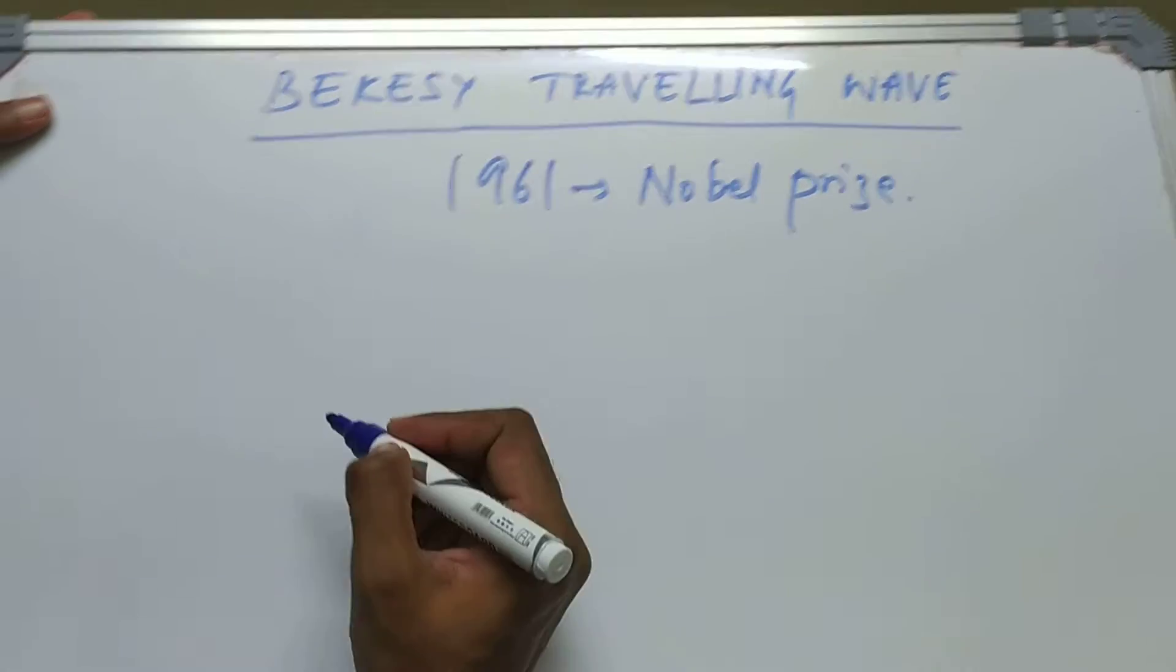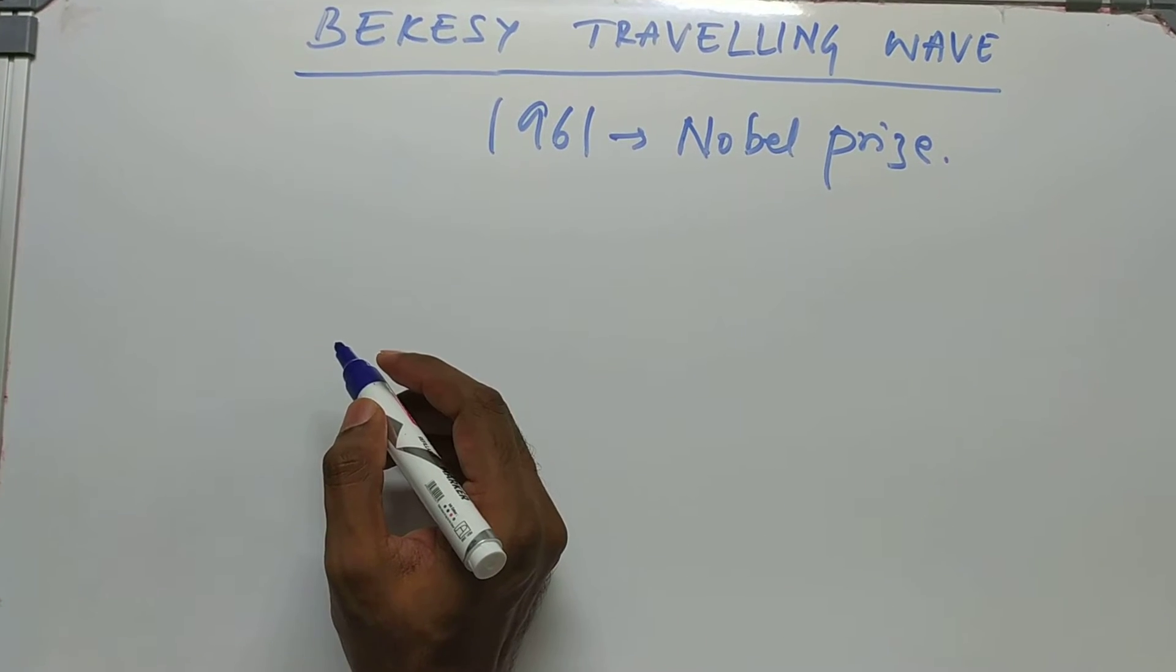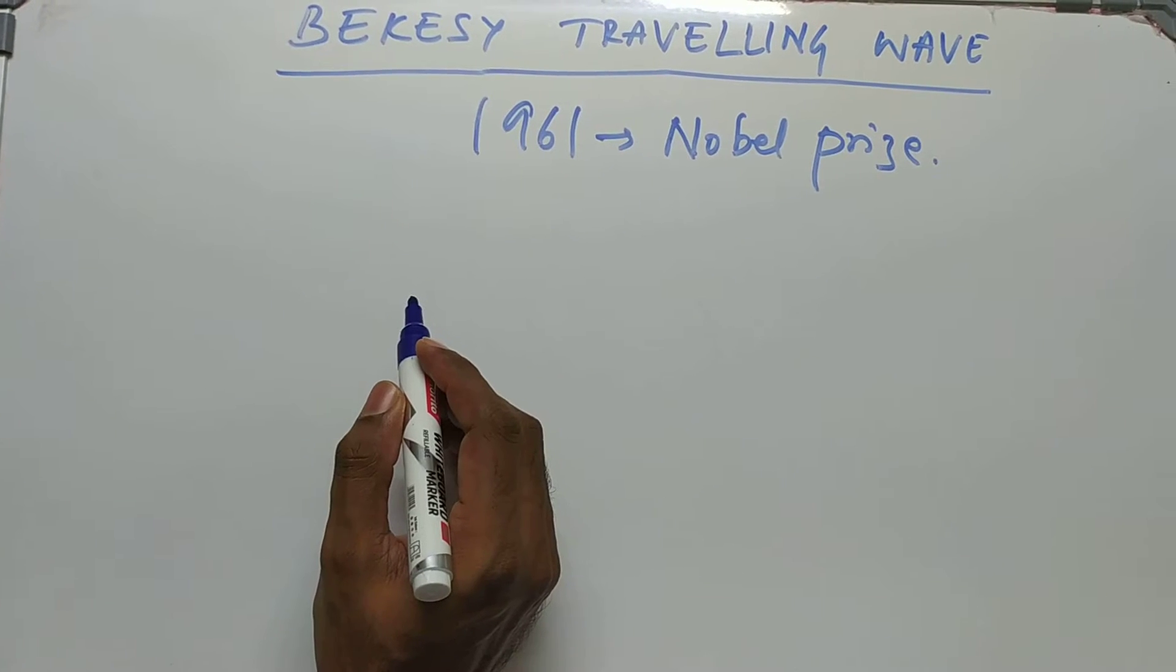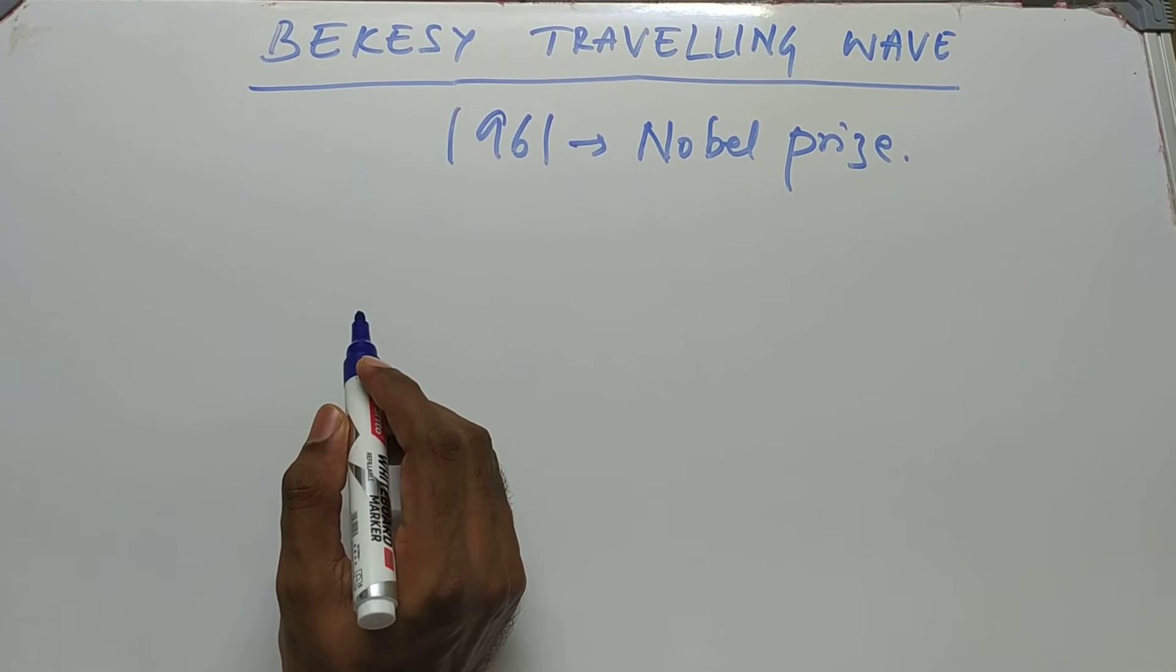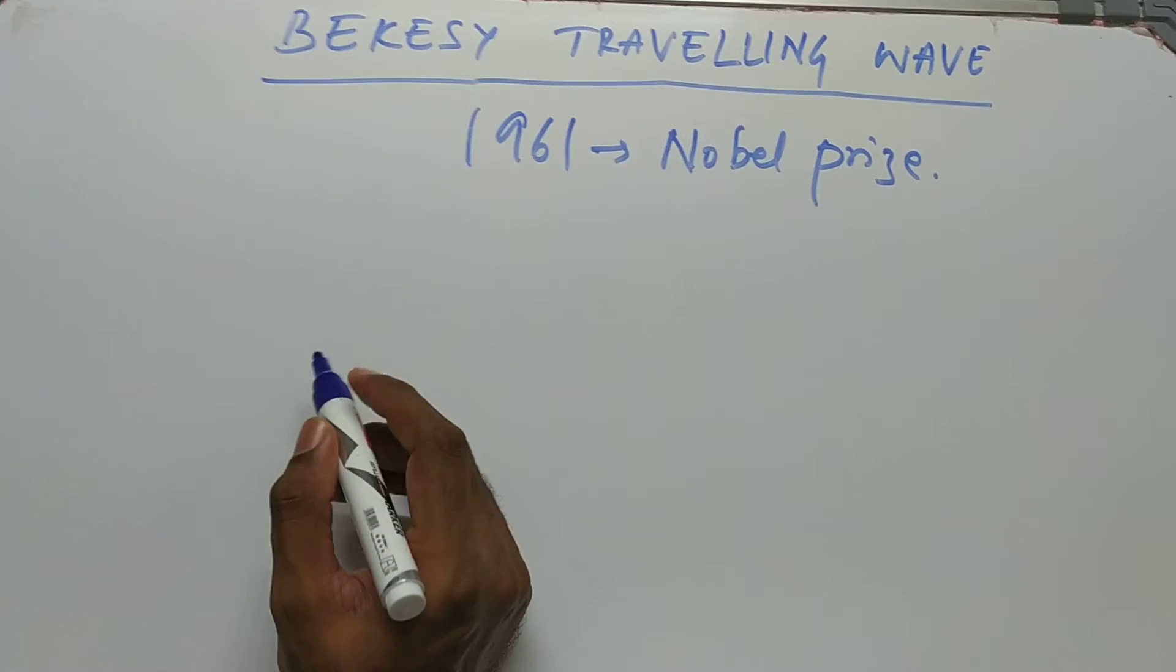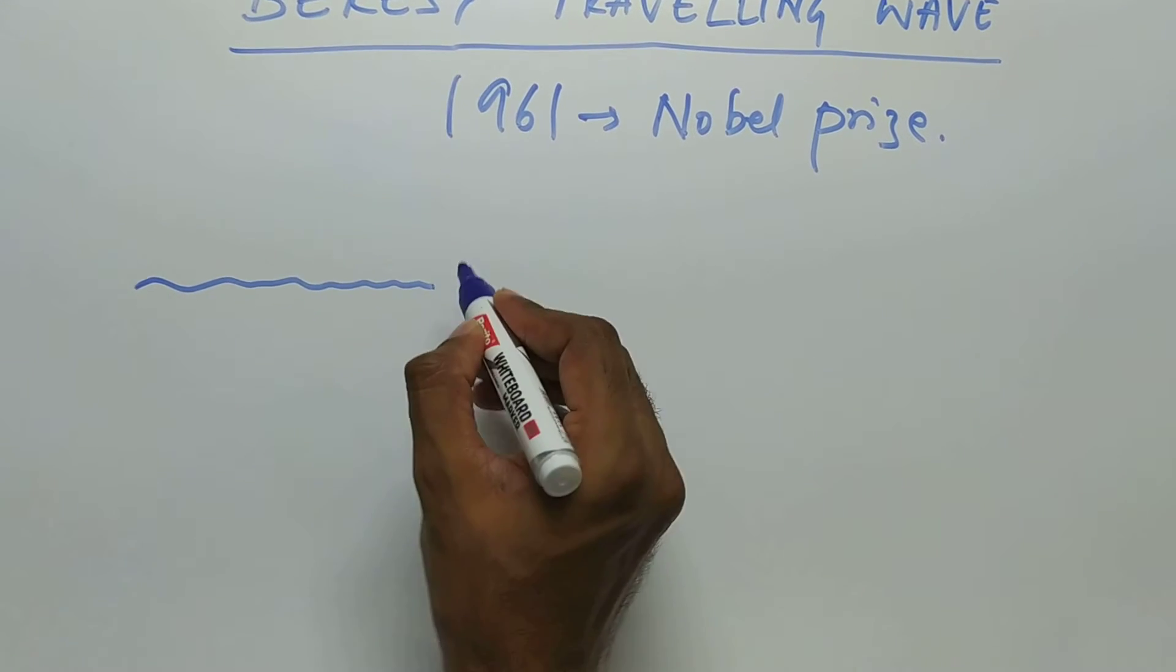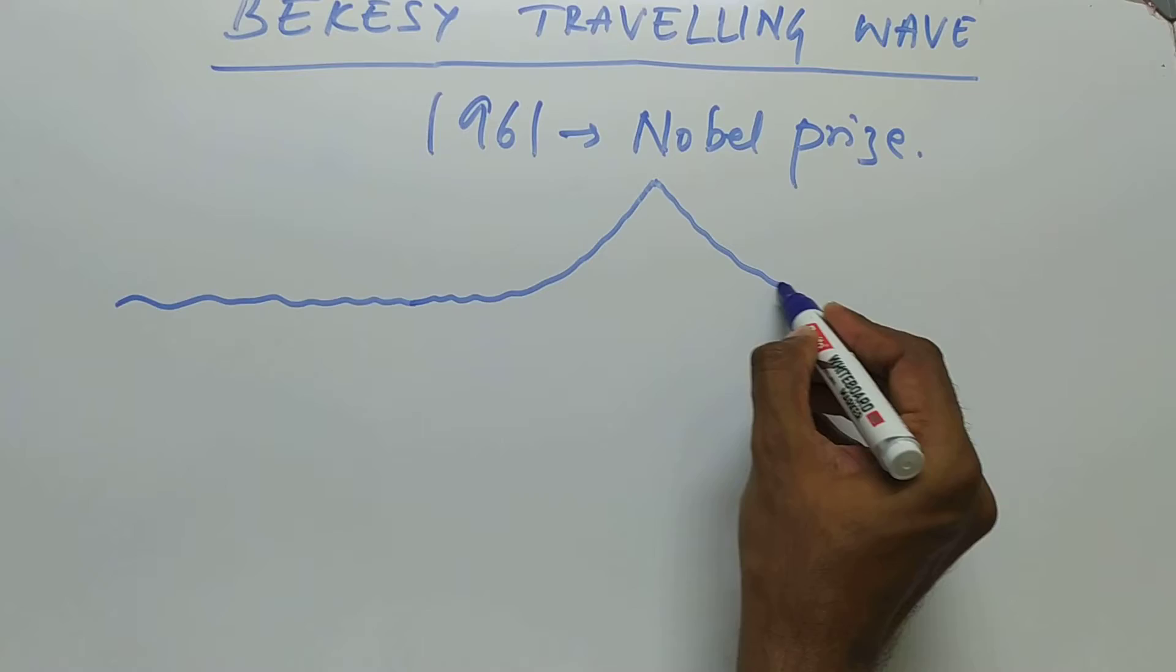What he said was the sound wave travels from base to apex and reaches its peak with respect to a frequency, then decays rapidly. The traveling sound wave moves, peaks at one respective frequency, and then decays.